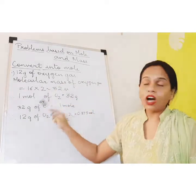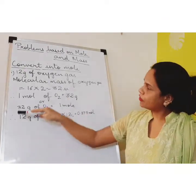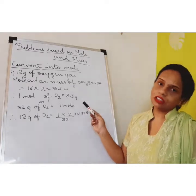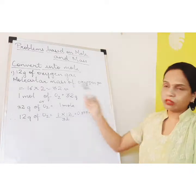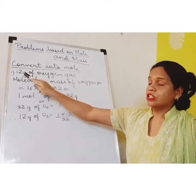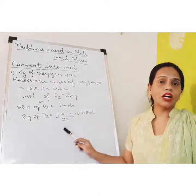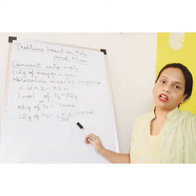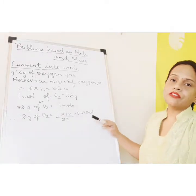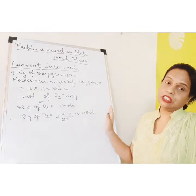Therefore 1 mole of oxygen equals 32 grams, or we can write it as 32 grams of oxygen equals 1 mole — means the same thing. Therefore 12 grams of oxygen gas equals 1 times 12 upon 32, which equals 0.375 moles. This is one way of doing it.